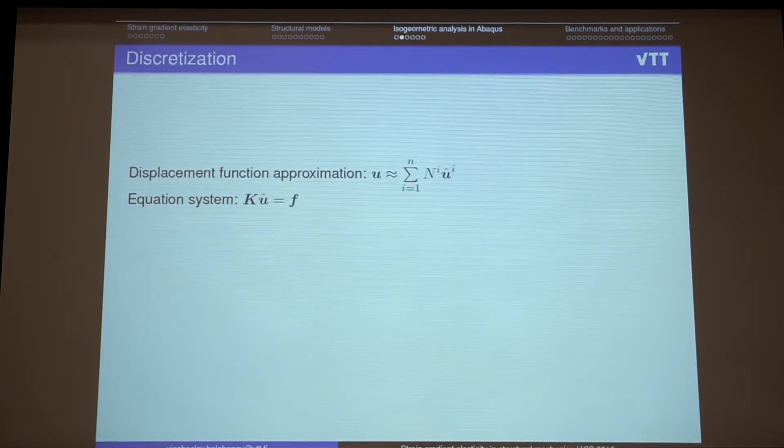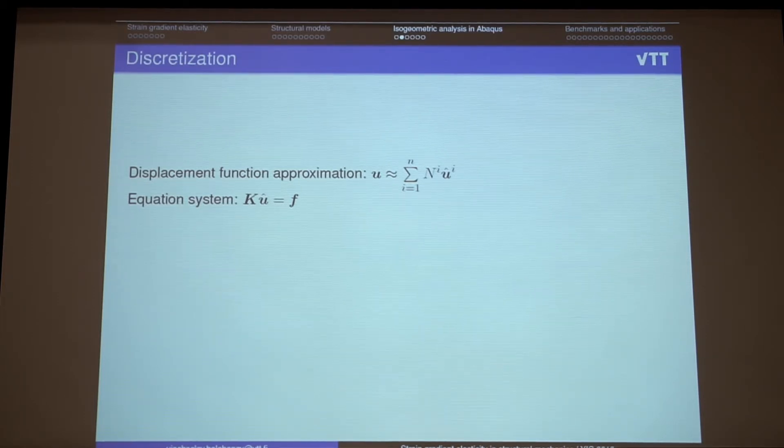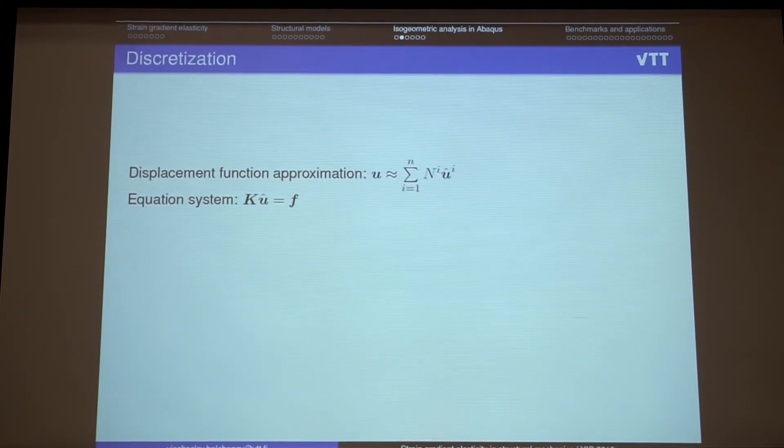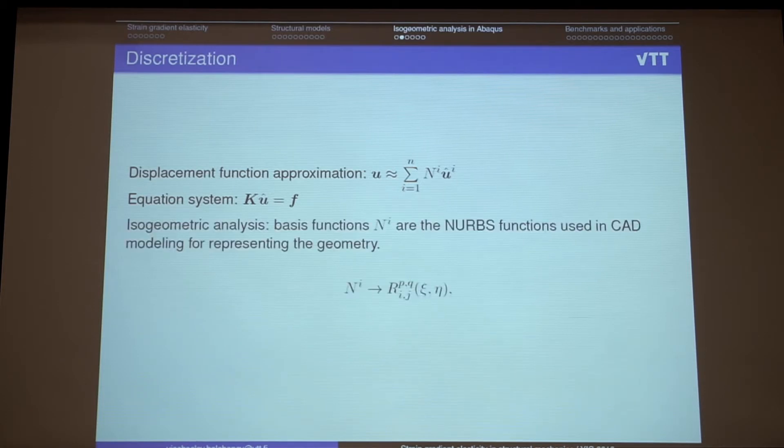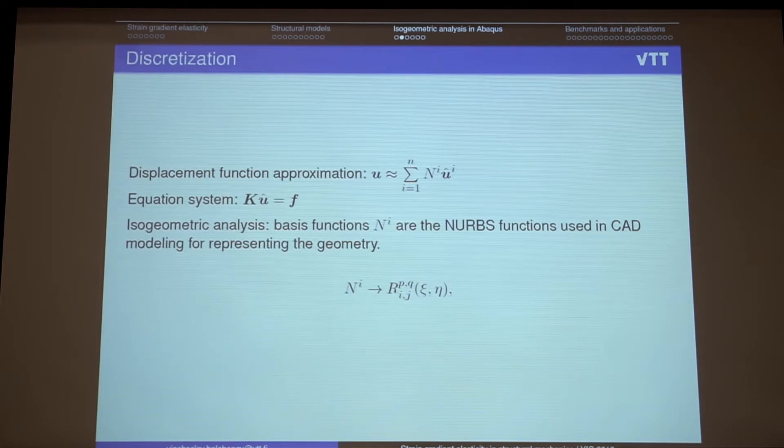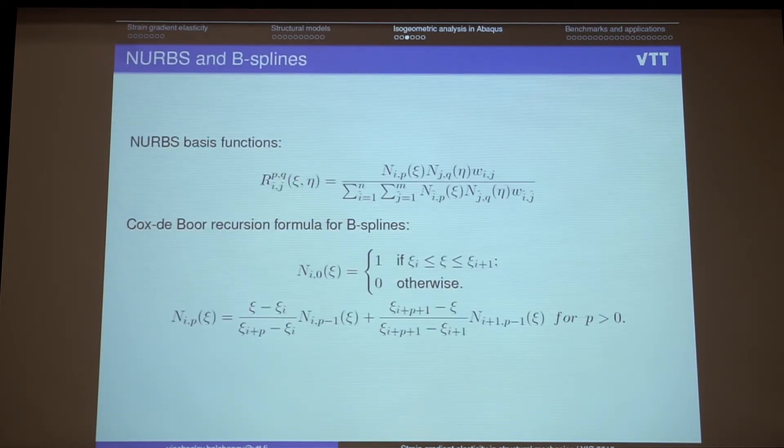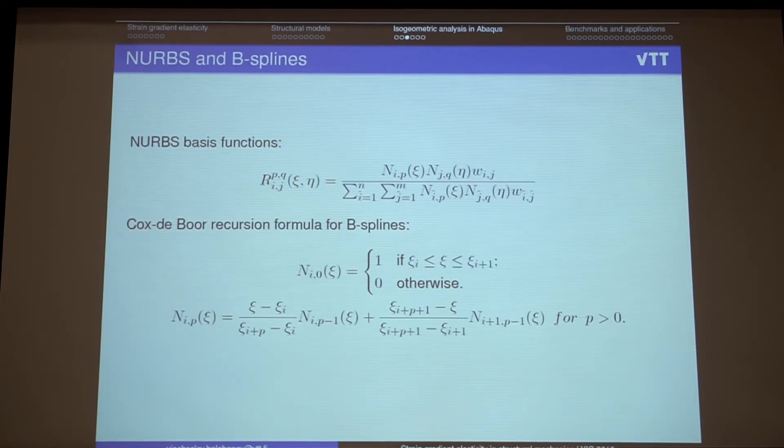Maybe I don't need to explain any isogeometric analysis in details. But the fact is that instead of... So we use the basis functions in the role of basis functions. We use NURBS functions which are used in CAD geometry for representing the geometry in CAD programs. And we use them as basis functions for our calculations. This engenders some problems. The method is more complex than classical finite elements. But it has a lot of advantages.